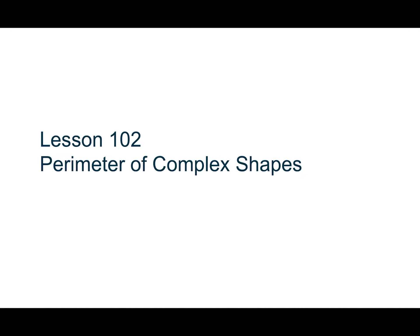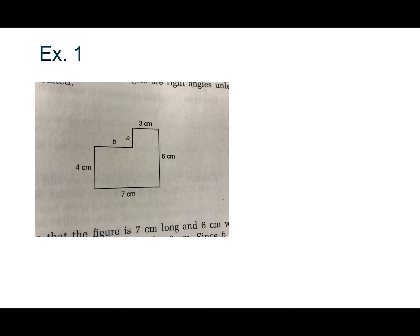Welcome to Lesson 102. This is the Perimeter of Complex Shapes. So as you can see, this is a shape that's in your book. And it's not a simple rectangle or a simple square. But we could still find the perimeter.